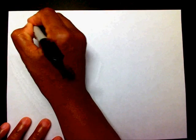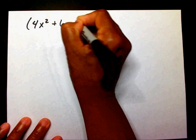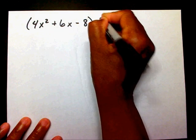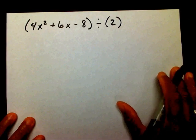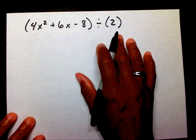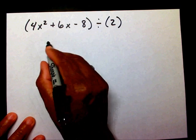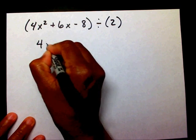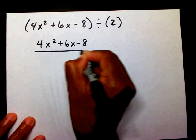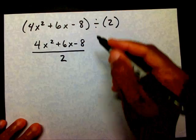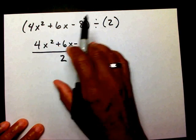Let's say we had 4x squared plus 6x minus 8 divided by 2. Let's rewrite this — instead of writing this horizontally, let's write it vertically. They're the same thing, but this is horizontal and this is vertical.